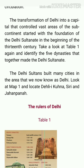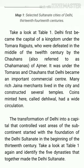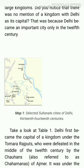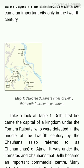The Delhi Sultanate built many cities in the area that we now know as Delhi. Look at Map 1 and locate Delhi-e-Kuhna, Siri, and Jahapana. On this map we can see Jahapana, Delhi-e-Kuhna, Tughlaqabad, Adilabad, and Siri.